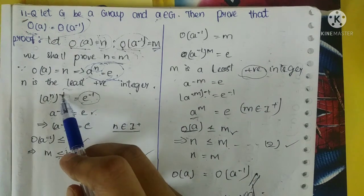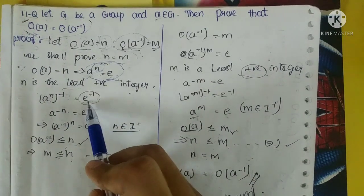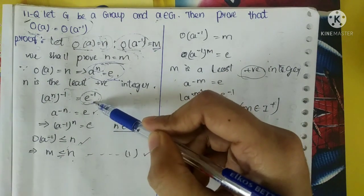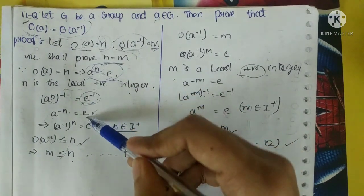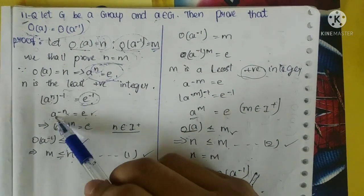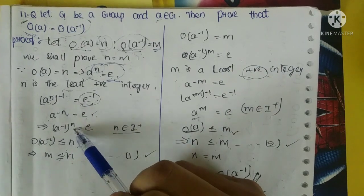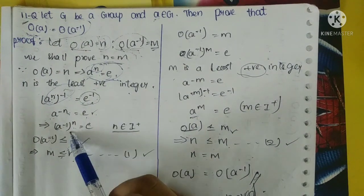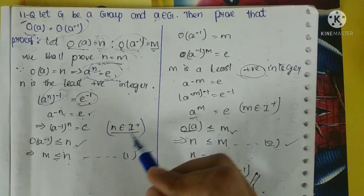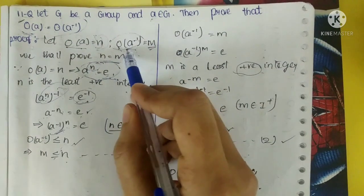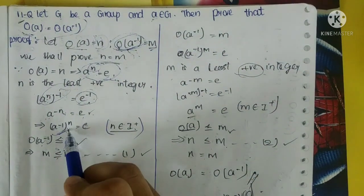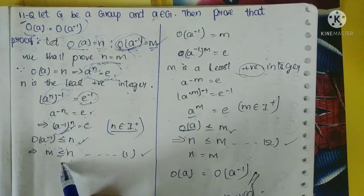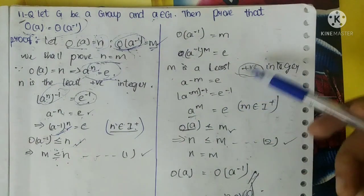A^N multiplied by (-1) gives A^(-N) = E. E inverse equals E based on Abelian group laws — closure, inverse, identity, and commutativity. So we can write A^(-1) whole power N = E, meaning O(A⁻¹) ≤ N, so M ≤ N. This is half completed.